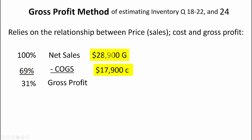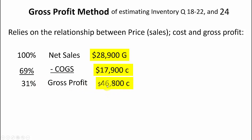Also, if you were given that sales were $28,900, you could figure out the gross profit in dollars. So 28,900 times 31% gives you $46,800 — this C stands for computed — as an estimated gross profit in dollars.